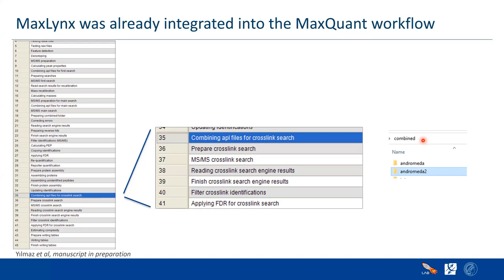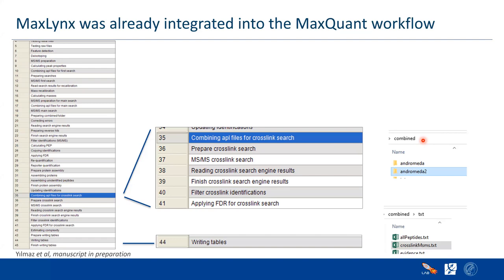The content in Andromeda 2 is very similar to the standard folder, but it also contains identification results for cross-linked peptides, which you won't find in the regular Andromeda folder. Then we again do the searching, FDR calculation, and write the tables. On your combined TXT folder, you will now find a cross-link MSMS table containing information for cross-linked peptides and also single peptides — all searches related to cross-linking will be there at the given FDR.